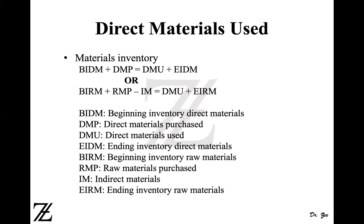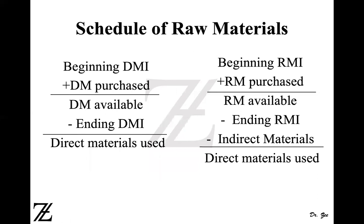If you prepare the schedule of direct material used, it will look like this. When all material is direct material, use the schedule on the left: beginning inventory direct material plus direct material purchases gives direct material available, then subtract ending direct material to get direct material used. If your material includes both direct and indirect material, use the schedule on the right: beginning inventory raw material plus raw material purchases gives raw material available, then subtract ending inventory raw material and indirect material to get direct material used.